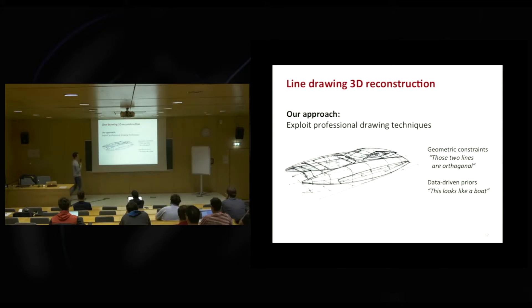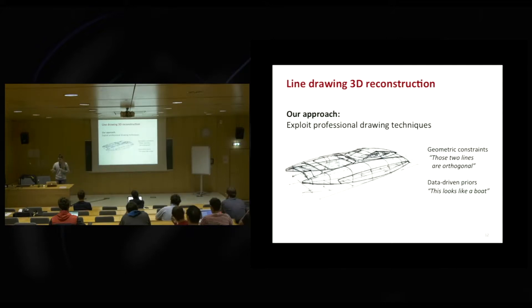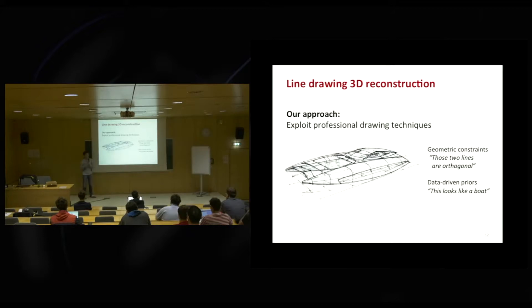Another approach is a more data-driven method, where we train a computer to recognize the type of shape that designers draw — either at the scale of a complete object like recognizing a boat, or more locally recognizing that a part is mostly cylindrical, based on prior observation of similar drawings. We actually explored both directions. In the long term I think they are very complementary: the data-driven approach can give a very good initial guess, which can then be refined by local geometric optimization. I'll start with a project called CrossShade that illustrates our methodology well.